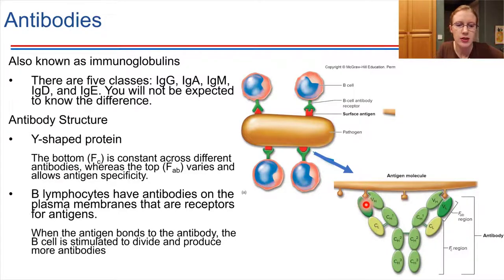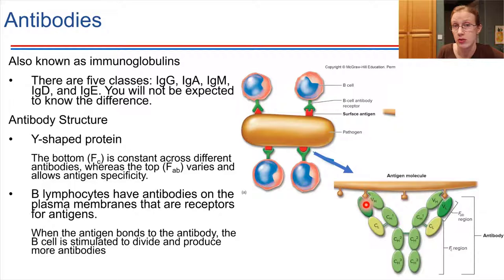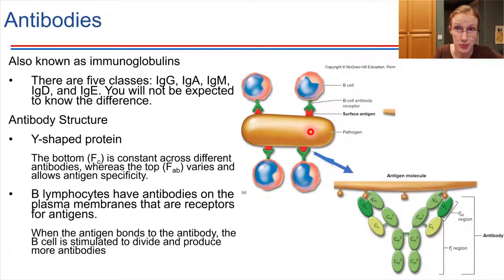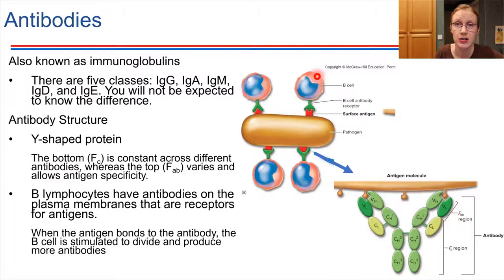B lymphocytes secrete these antibodies into circulation, but they also have antibodies embedded on their own surfaces in their own plasma membranes. If a B cell binds to some sort of pathogen, that binding is the triggering event that causes the B cell to go and proliferate itself, making clonal copies of itself.